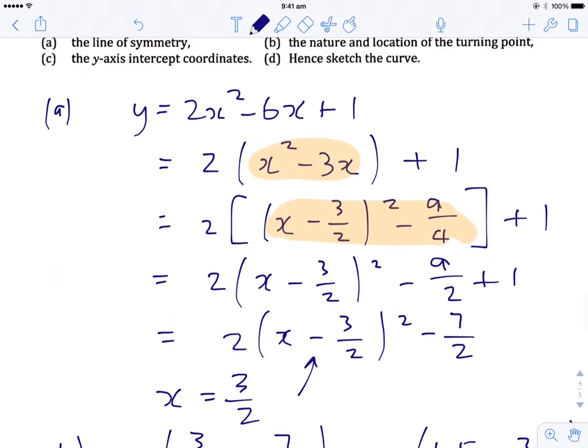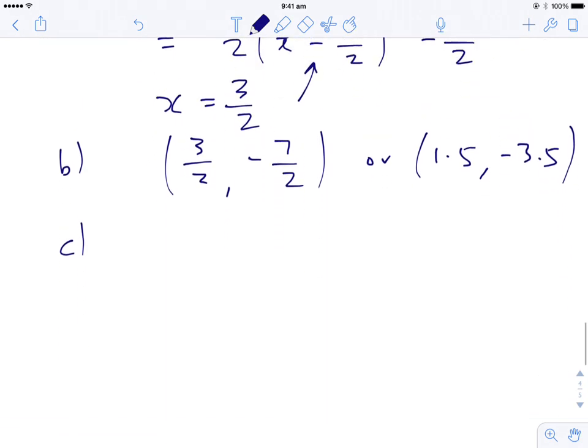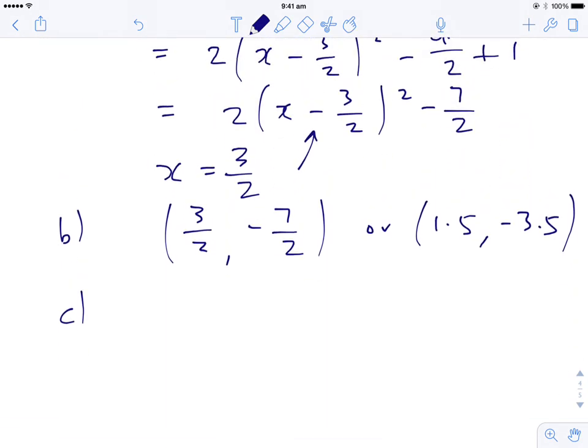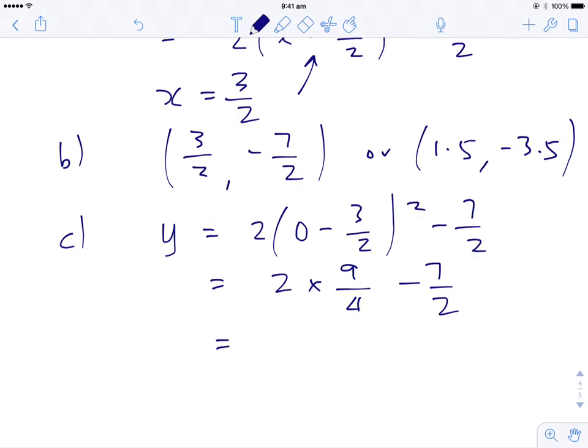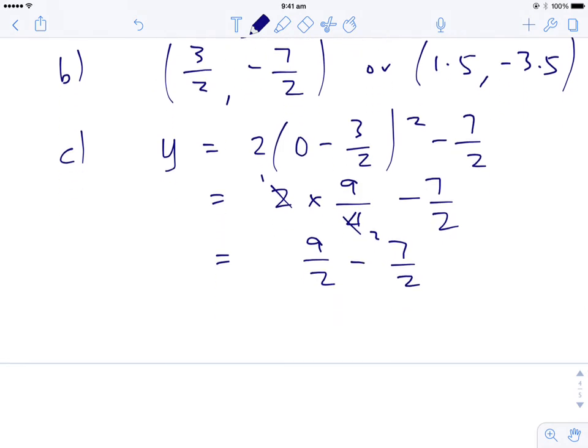C is going to say the y-axis intercept. So again, the y-axis intercept is when x is equal to 0. So 2 times minus 3 over 2 squared is 9 over 4. Now you can get your calculator out now. I'm going to keep going. So this is 9 over 2 minus 7 over 2, which is 2 over 2 or 1. So therefore, the y-axis intercept is 0, 1.